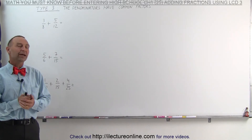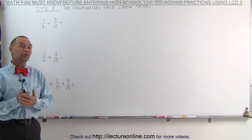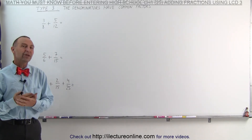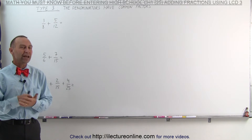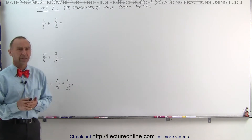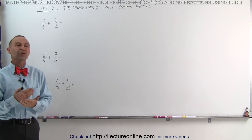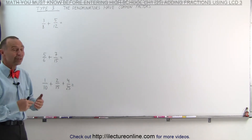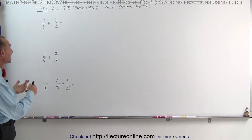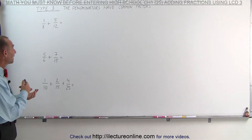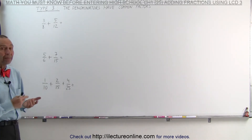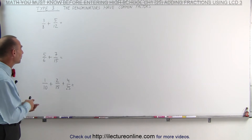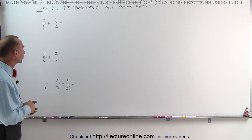Welcome to ElectronLine. When you're trying to add fractions and the denominators have common factors, you must first find the lowest common denominator by using the technique where we take each of the denominators and write them as a product of their prime factors.